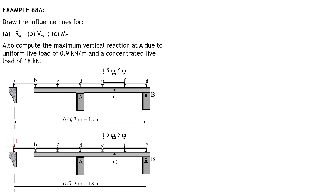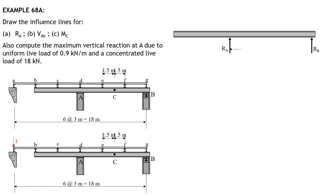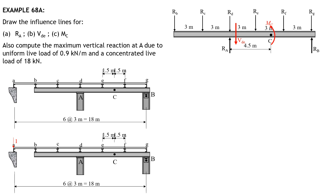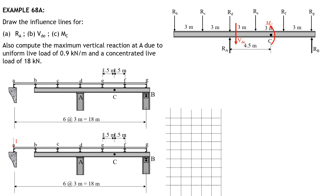When the unit load is at A, x is zero. Let's have the free body diagram for RA and derive equations for shear in panel DE. These are the transmitted reactions at B, C, D, E, F, and G. This is the shear in panel DE and the moment at C in the positive direction. When the unit load is at A, RB is zero if you sum up moments about A considering AB only, so we have RB, RC, RD, RE, and RF.